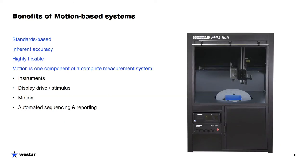The benefits of motion-based systems — and we'll get into more detail in future slides — they're standard-based, they have inherent accuracy, they're highly flexible, and the motion is one component of a complete measurement system. It can be a centerpiece to which you can attach various instruments, display drive, the motion itself, light sources for reflection, and automated sequencing of the test and reporting.